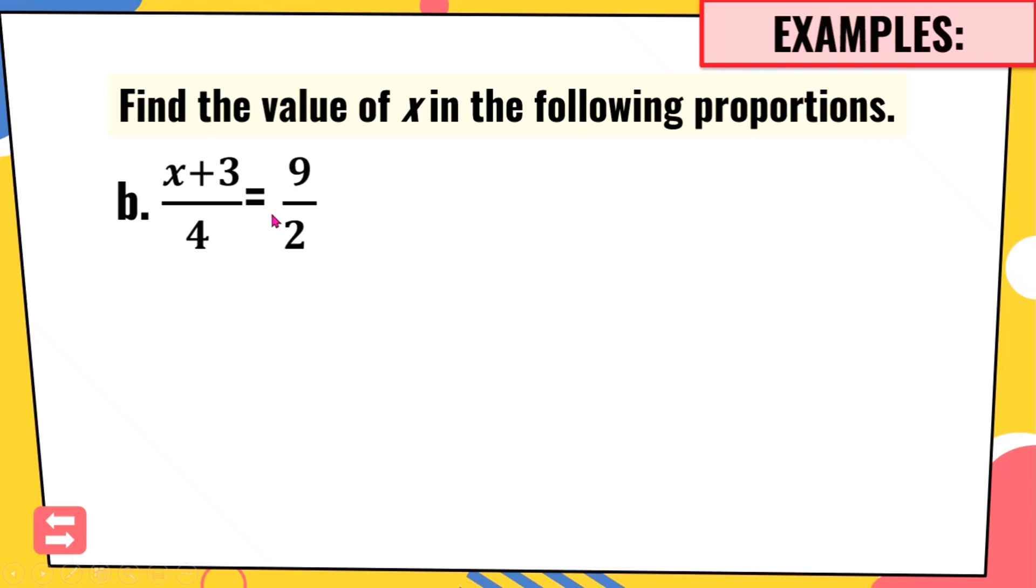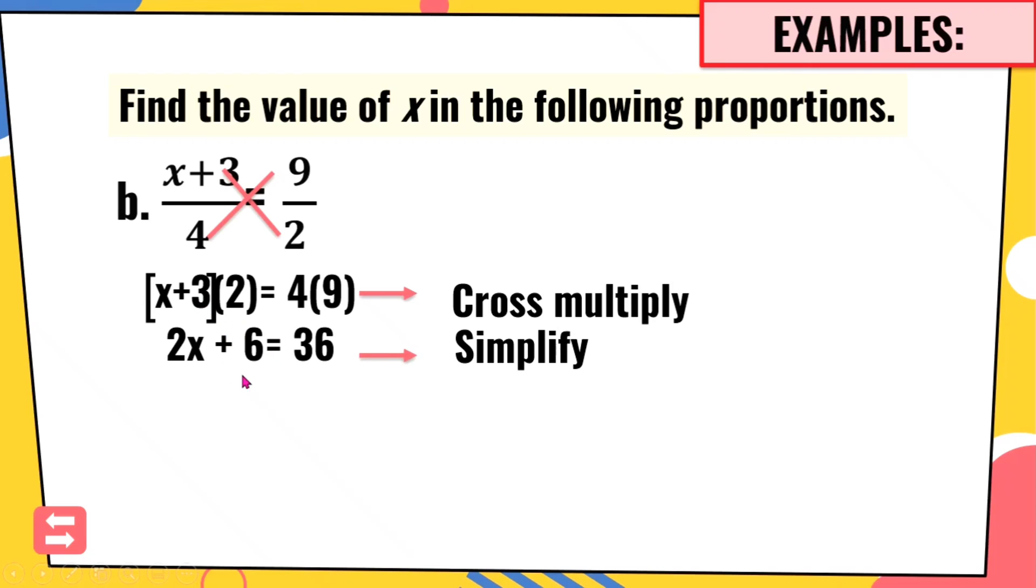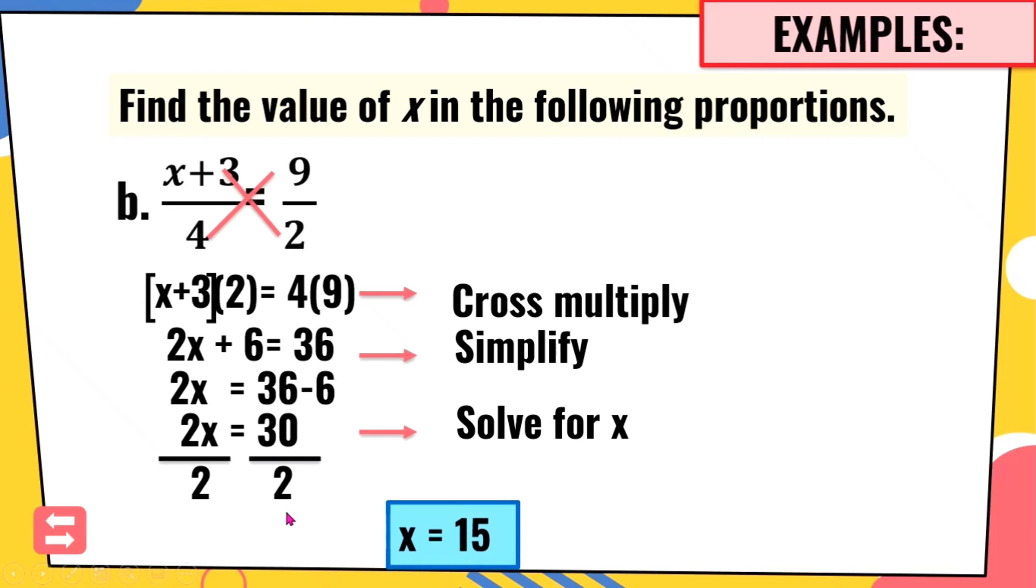X plus 3 over 4 is equal to 9 over 2. Again, cross-multiply lang tayo ulit. X plus 3 times 2. This is it. Then 4 times 9. Cross-multiply. X times 2 is 2X. 3 times 2 is 6. 4 times 9 is 36. And then move na lang natin yung 6 to the other side. Magiging negative na siya. Maiiwan sa side na ito yung 2X. 36 minus 6 is 30. Then get the value of X or solve for X. We need to divide both sides to 2. Para ma-cancel yung 2 at maiiwan yung X. 30 divided by 2. The answer is 15. So therefore, our X is 15.